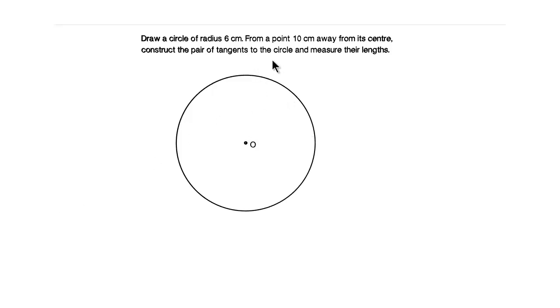So now let us mark a point P which is 10 cm away from the center of the circle. So center of the circle is O, from here you need to measure 10 cm in your scale and mark a point away from the center of the circle. You can mark the point 10 cm away from the center at any direction. I am going to take on the right side.